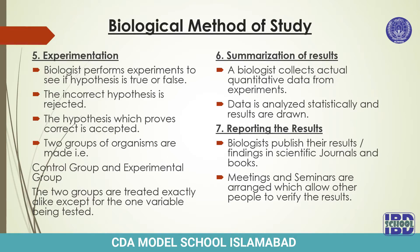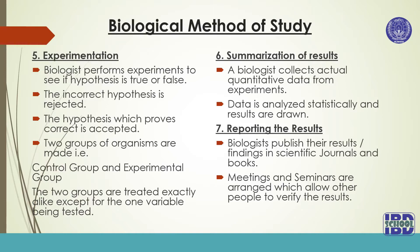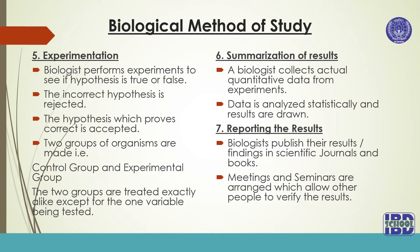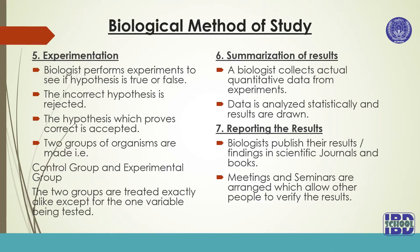The last step is reporting the results. Biologists publish their results or findings in scientific journals and books. Scientific journals are scientific magazines which are published periodically throughout the year, and they are a medium through which a scientist is able to publish findings. After publishing, meetings and seminars are arranged in which discussions are made upon the results and people get a chance to verify the results.